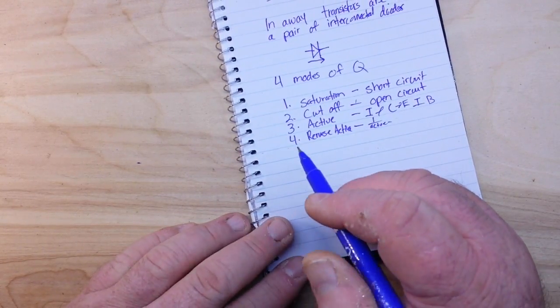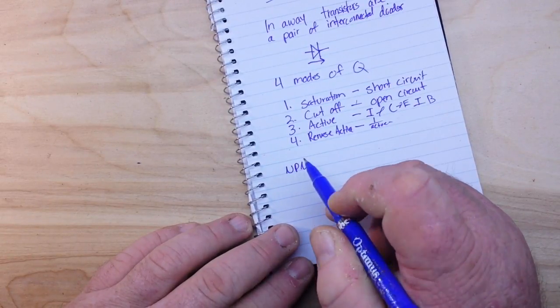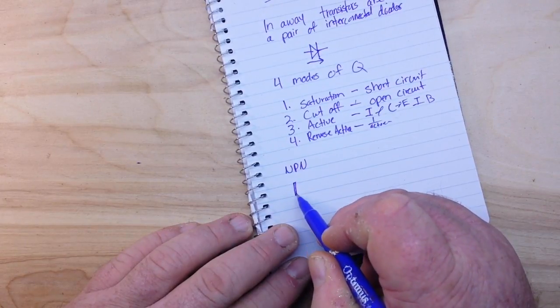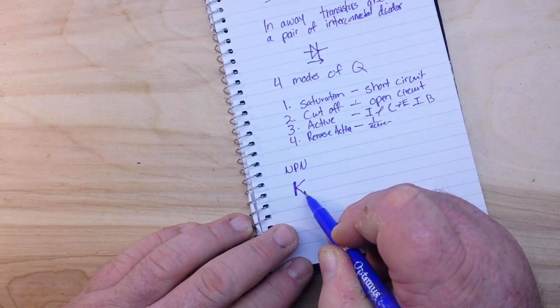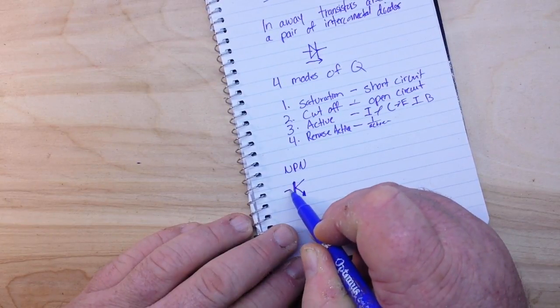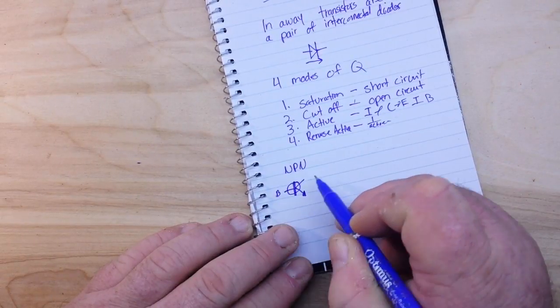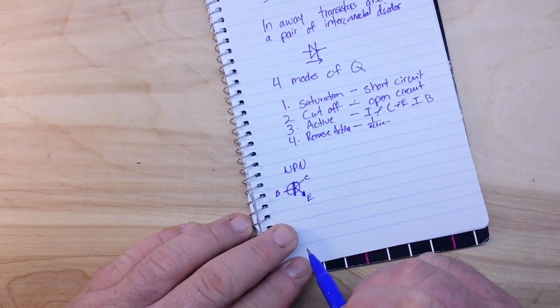So we talked about NPN transistors and we'll just draw one here. So there is our base, our collector, and our emitter.